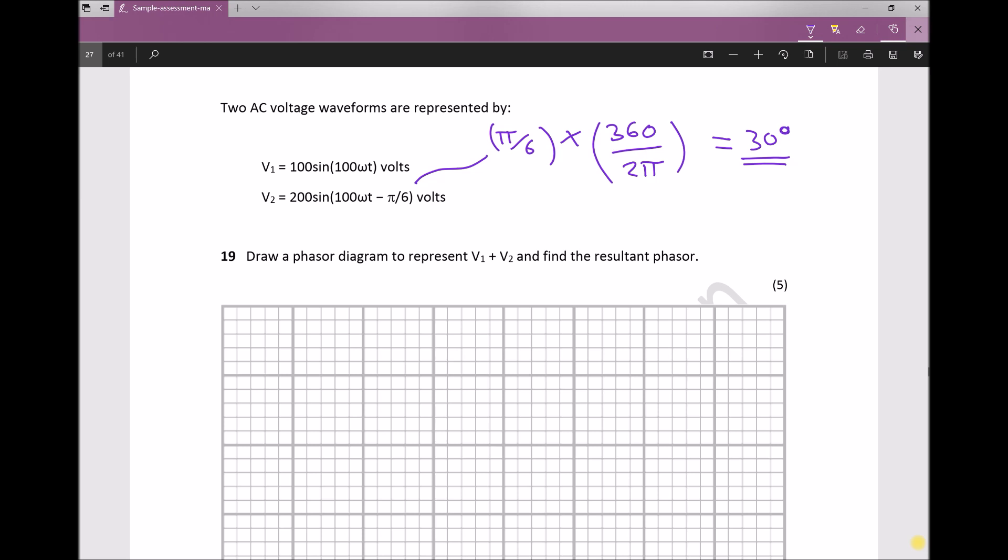The way I remember this conversion: if I'm trying to get to degrees, I put the number of degrees in a circle on top of the fraction, and if I'm converting from radians, I put the number of radians in a circle on the bottom. If converting from degrees to radians, that conversion factor would just be flipped.